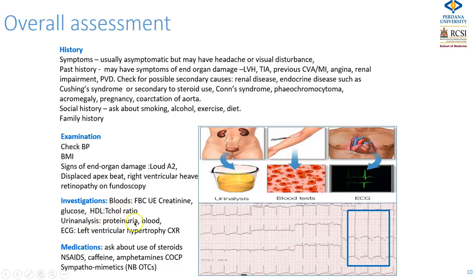Urinalysis is very important to pick up proteinuria and blood, which may indicate an underlying renal cause for hypertension. An ECG is mandatory to look for left ventricular hypertrophy — an ECG is more reliable than a chest X-ray to assess cardiac size. Ask about use of steroids, non-steroidal anti-inflammatories, caffeine intake, amphetamines, other recreational drugs, the contraceptive pill in women, and over-the-counter cough medicines, which can act as sympathomimetics. An ECG showing LVH has very tall QRS complexes and T-wave inversion indicating left ventricular strain.